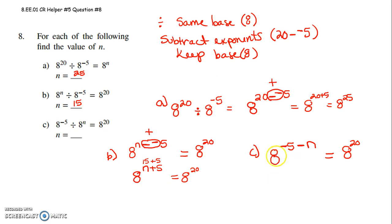I'm going to write that equation down below. So 8 to the negative 5 minus N has to get me 8 to the 20th. So I'm just going to look at my powers here. Negative 5 minus N has to get me to 20. So now I could solve this equation. I could go ahead and add 5 to each side.